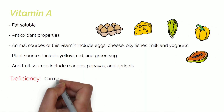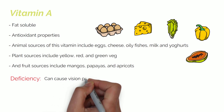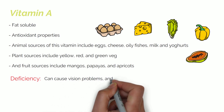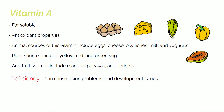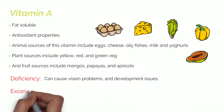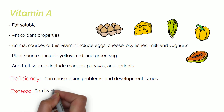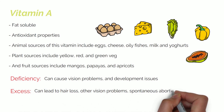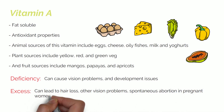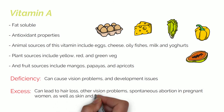A deficiency of this vitamin can cause vision problems and development issues. On the other hand, an excess of this vitamin can lead to hair loss, other vision problems, spontaneous abortion in pregnant women, as well as skin and bone issues.